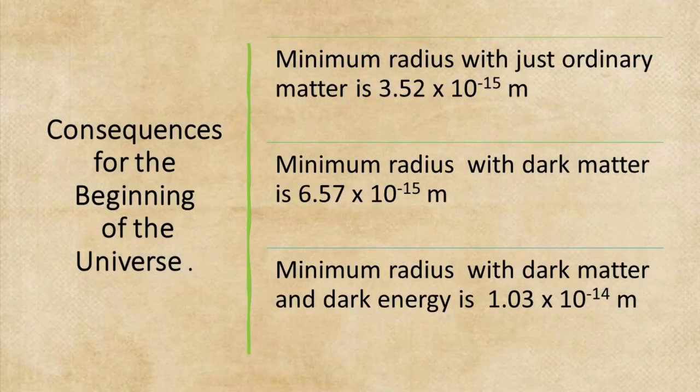This results in a minimum radius for the universe with just ordinary matter of 3.52 times 10^-15 meters. The minimum radius with dark matter is 6.57 times 10^-15 meters. The minimum radius with dark matter and dark energy would be 1.03 times 10^-14 meters.